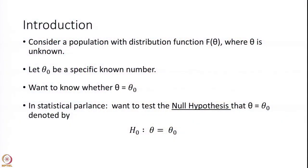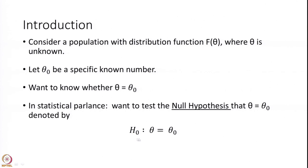Consider a population with a distribution function f(theta) where theta is the parameter and it is unknown. If we know theta we know the distribution and therefore the population — but we do not know theta. Let theta-naught be a specific known value. As in the previous example, if the company claimed that their material has yield strength Y, then this Y is theta-naught. We would like to know whether the unknown parameter theta is truly theta-naught. In statistical parlance, we say that we want to test the null hypothesis that theta equals theta-naught, denoted H0: theta = theta-naught.